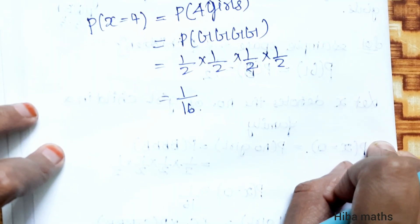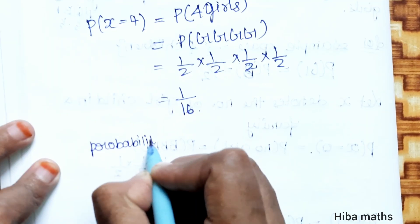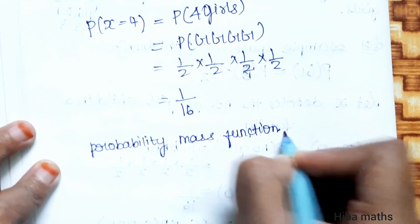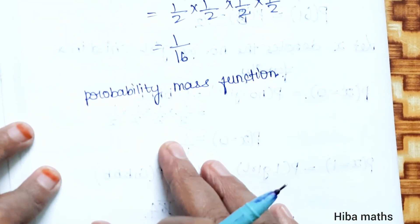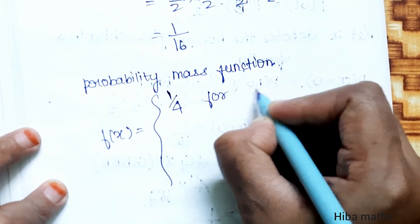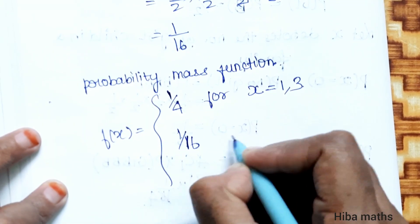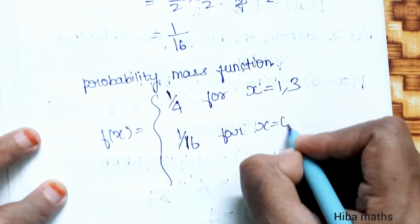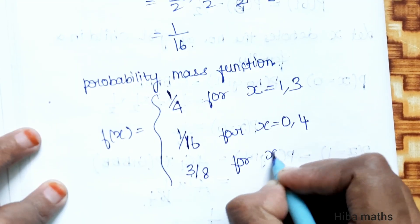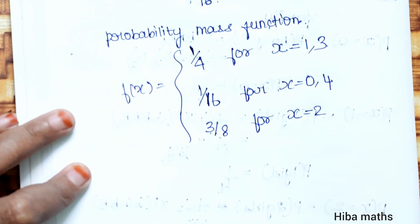Now let's assemble the Probability Mass Function table. The values are: P(X = 0) = 1/16, P(X = 1) = 1/4, P(X = 2) = 3/8, P(X = 3) = 1/4, P(X = 4) = 1/16. This completes the Probability Mass Function.